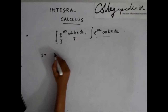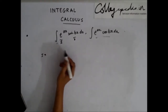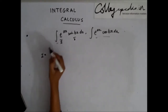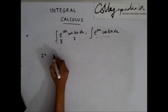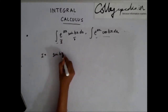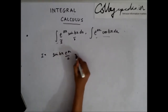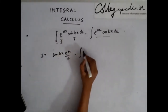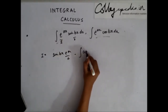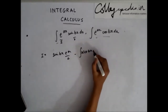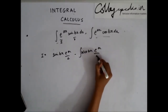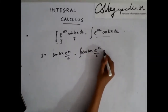So I equals the integration. If I solve this, I'll get sine(bx) times the integration of e^(ax), which is e^(ax)/a, multiplied by the differentiation of sin(bx), which is cos(bx)·b, and then we have e^(ax)/a dx remaining.